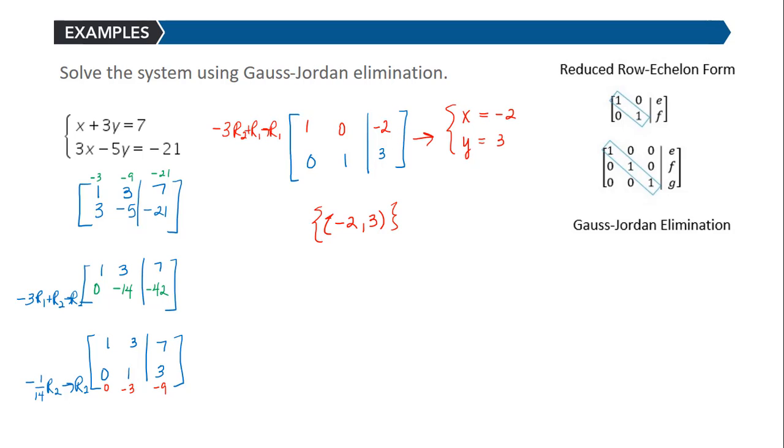And I can plug that in. Negative 2 plus 3 times 3 is negative 2 plus 9, which is 7. 3 times negative 2 is negative 6 minus 5 times 3 is 15. So negative 6 minus 15 is negative 21.